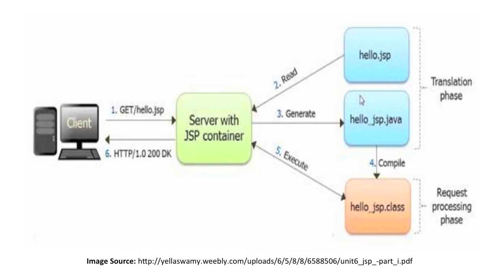In Step 4, the dot Java file is compiled and converted into a dot class file. This is the execution phase, also called the request processing phase. After executing the program, the response is sent back to the server with the JSP container, and finally the response moves to the client through HTTP — Hypertext Transfer Protocol.